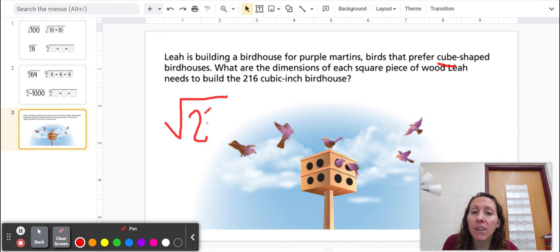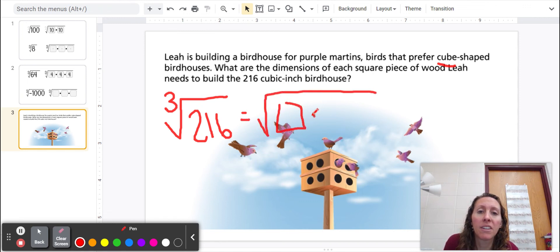So Leah is trying to find the cube root of 216. We need to figure out what the length and width and height are of that birdhouse. And they all have to be the same to make it a cube.